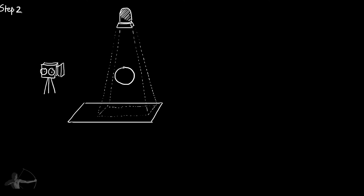This way, every fragment to be drawn is evaluated and marked as one or zero — one means it is a lit fragment, zero means it is a shadow fragment. Unity stores this complete map of ones and zeros and provides it to shaders as a global variable called `_ShadowMapTexture`. Global variables can be shared by all shaders in the scene, set by scripts, and their values read from shaders.